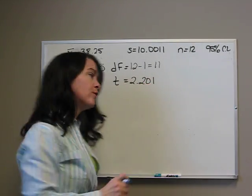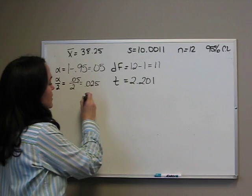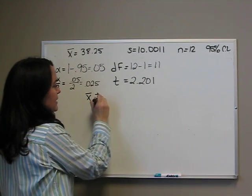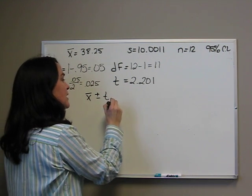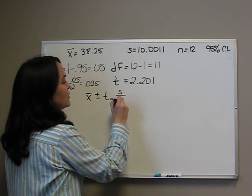Just like before, when we're doing this, we have x̄ plus and minus, this time t sub alpha over 2, and s over the square root of n.